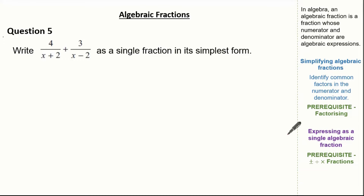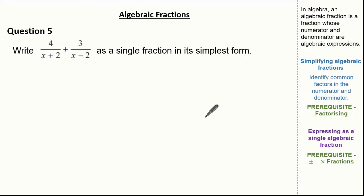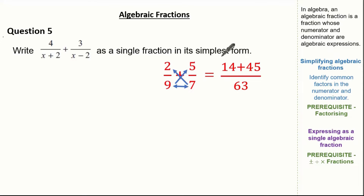This part of the tutorial will require prerequisite knowledge in adding and subtracting, dividing and multiplying fractions. We're given 4 over (x plus 2) add 3 over (x minus 2) and asked to write this as a single fraction in its simplest form. Let's look at a simple fraction — 2 over 9 and 5 over 7 — using the cross-multiply method. 7 times 2 is 14, 9 times 5 is 45, the question says add, and 9 times 7 is 63, giving us 59 over 63.